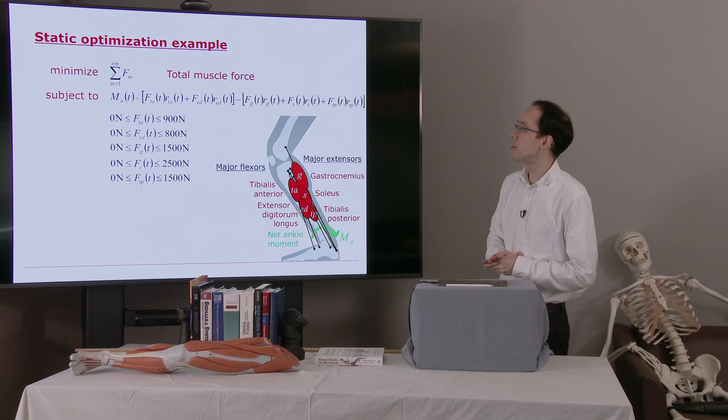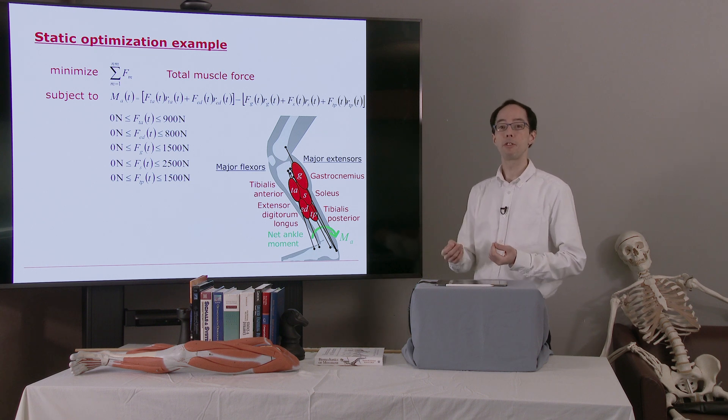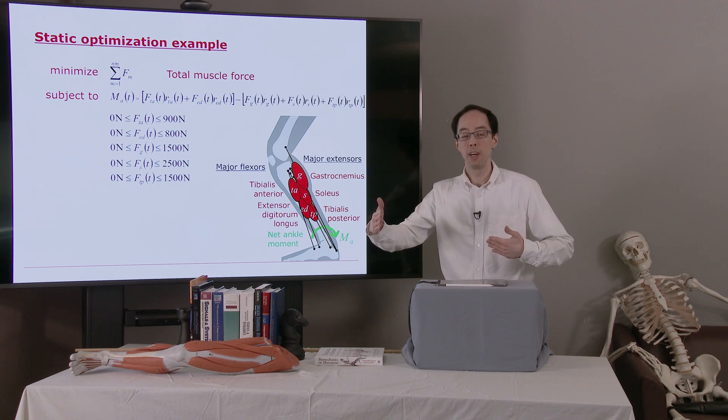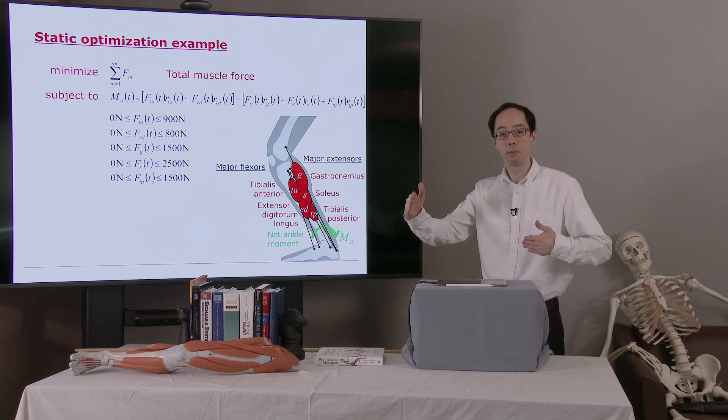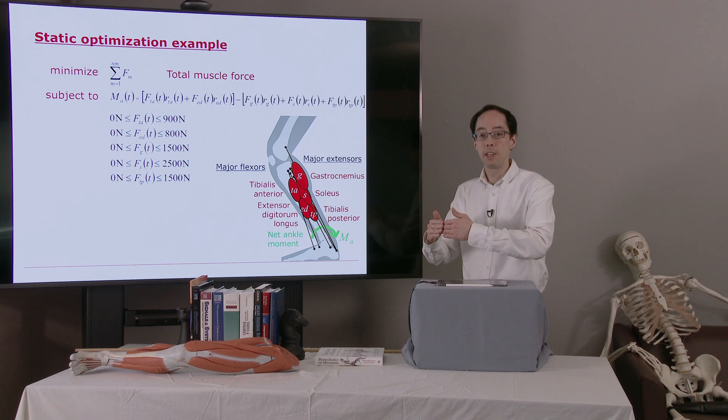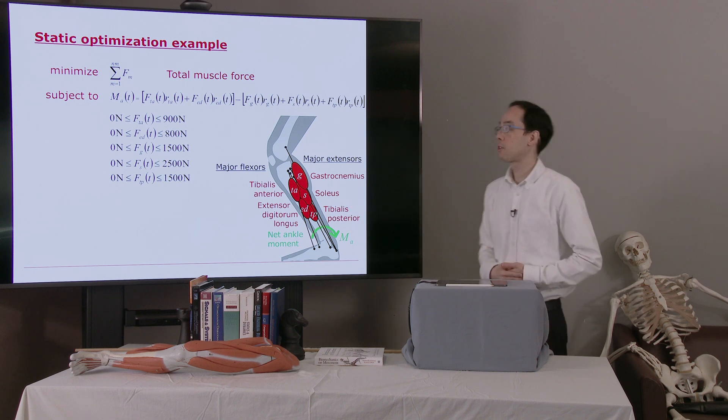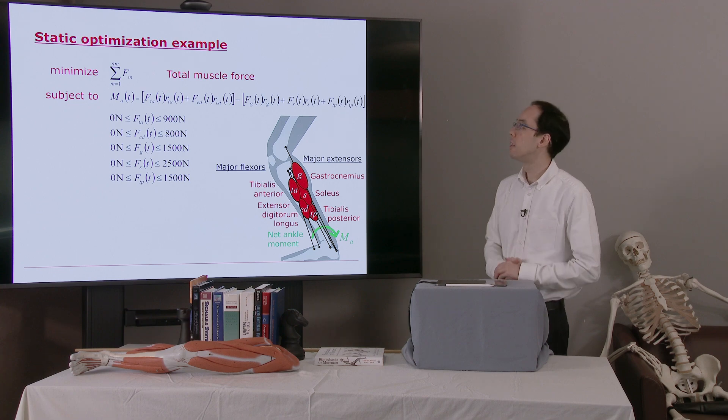So the optimizer will favor using the muscle that has the largest moment arm. And it will use that muscle as much as possible until it reaches its maximum. And that will start to recruit the muscle with the next highest moment arm. That's not at all going to be a biologically reasonable solution.